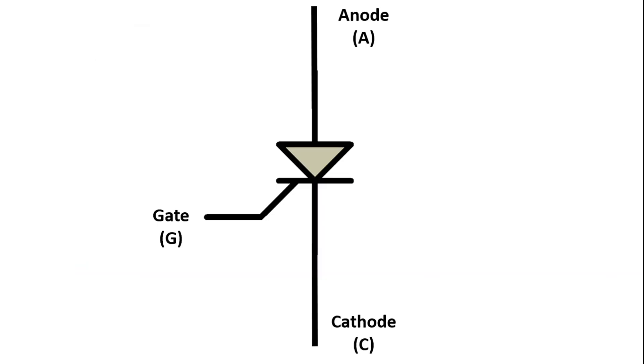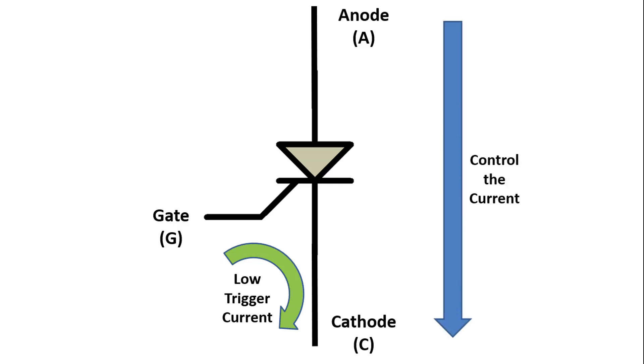The working principle of the thyristor is very similar to the transistor, but there are minor differences. When a low trigger current comes from the gate pin of the thyristor, a current flows from the anode pin to the cathode pin. This means that with a low trigger current from the gate pin, a high current between the anode and cathode is controlled.